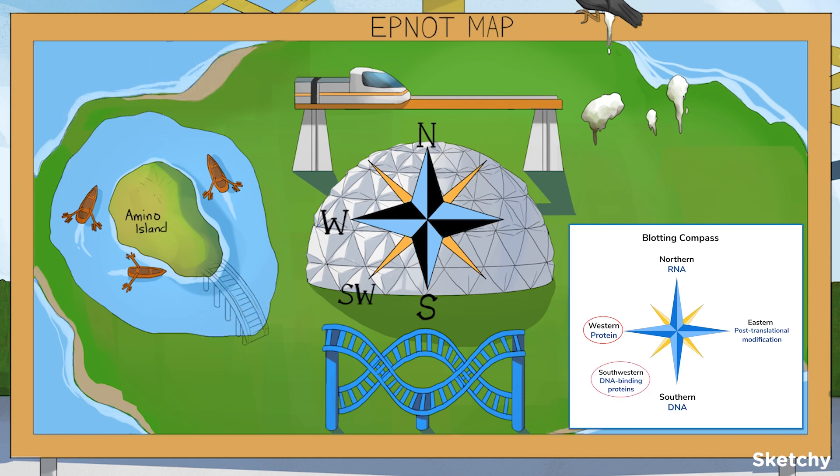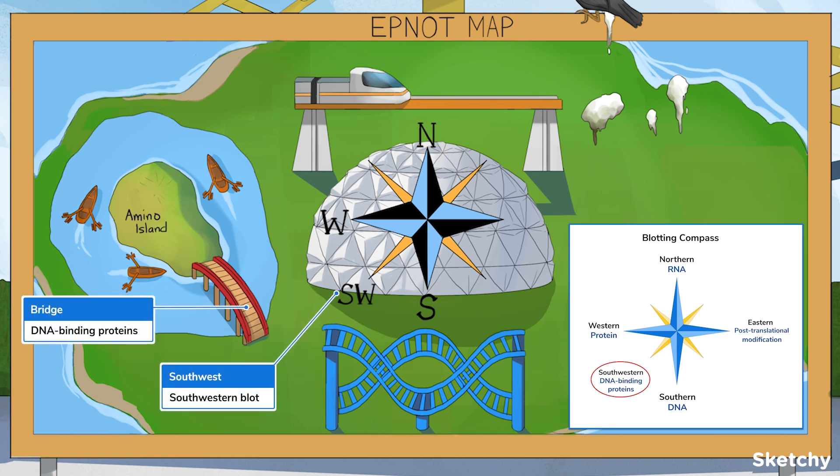Then there's also the Southwestern blot, that's essentially a hybrid of Southern and Western blot. This method uses labeled double-stranded DNA probes to look for DNA binding proteins, depicted by this connecting bridge. Ready for more roller coaster action? Here's a pro tip. Take the bridge. You'll get there fast and you'll skip the line.